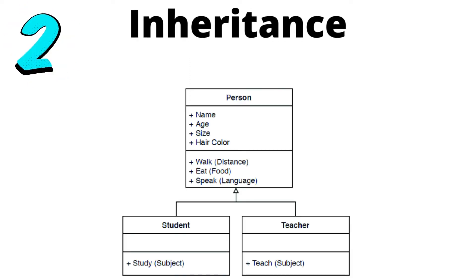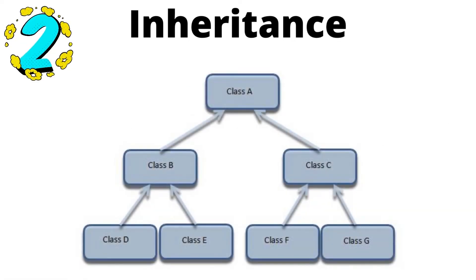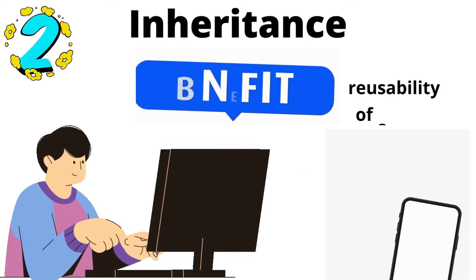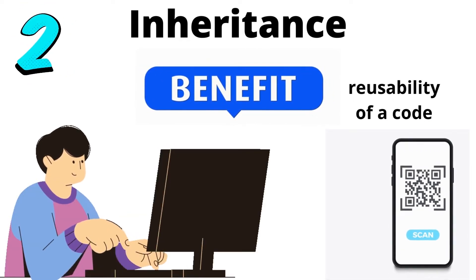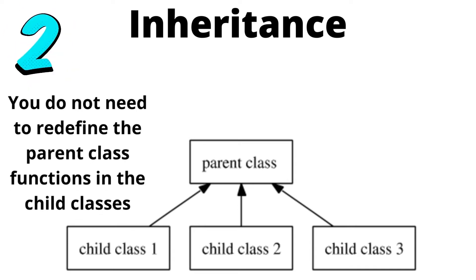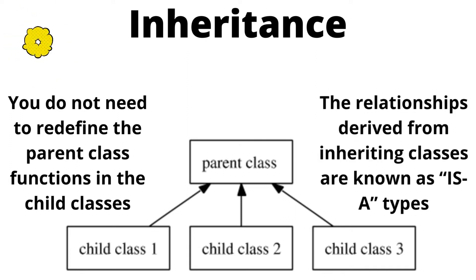2. Inheritance. Inheritance is an important aspect of object-oriented programming. Almost every OOP language supports hierarchies, meaning that a class can have a parent and a child class. A class inherited from another class obtains the same properties and functionality, but it can also be extended to contain more code. Inheritance has many benefits, the biggest one being the reusability of code. You do not need to redefine the parent class functions in the child classes — you can simply use them anywhere in the code. The relationships derived from inheriting classes are known as IS-A types.